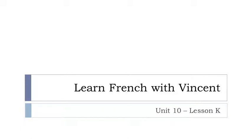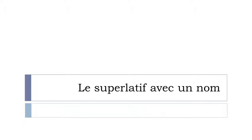Bonjour à tous and welcome to Learn French with Vincent. This is Unité 10, leçon K. In this lesson we'll see le superlatif avec un nom. Le superlatif — remember it's 'the most' or 'the least' in English.